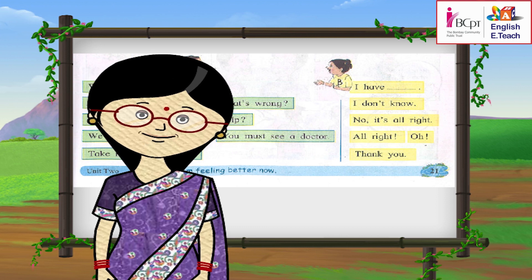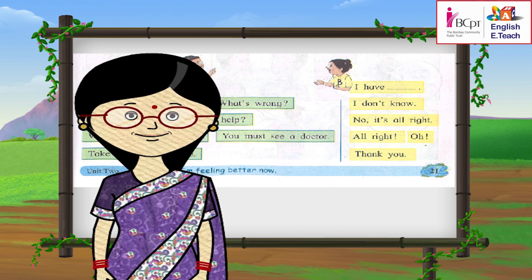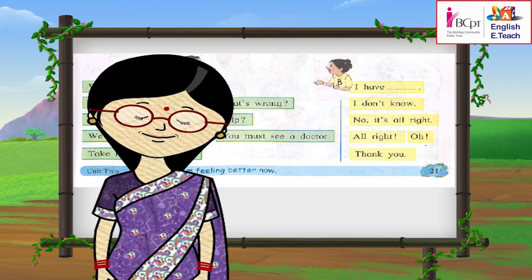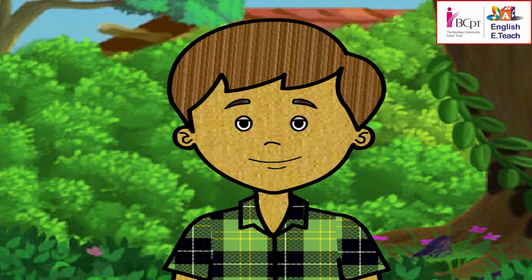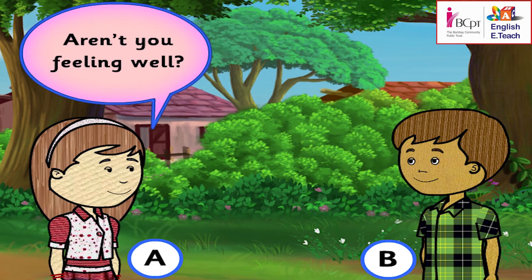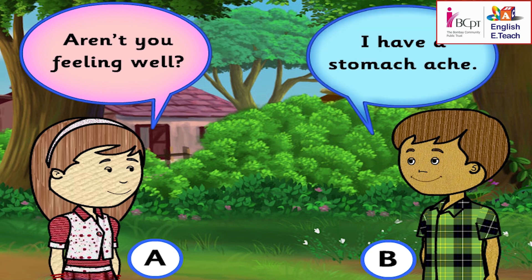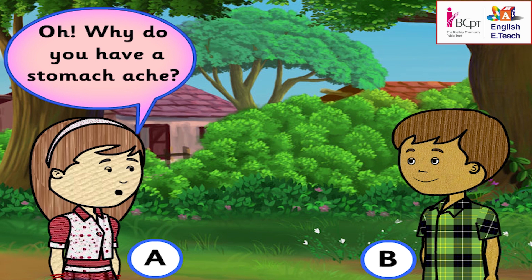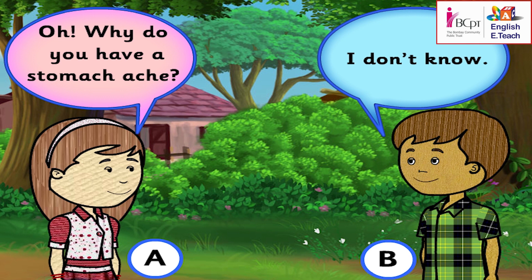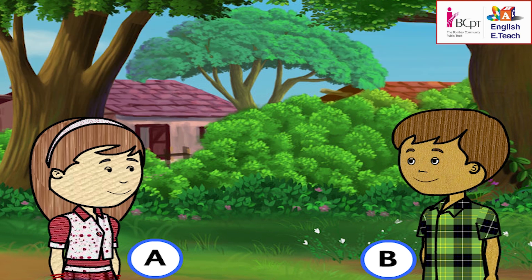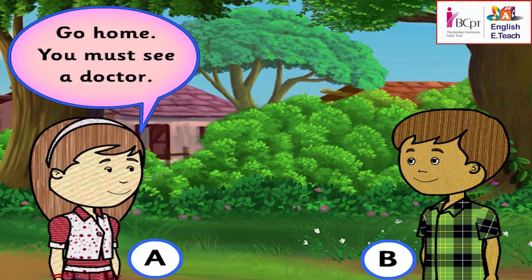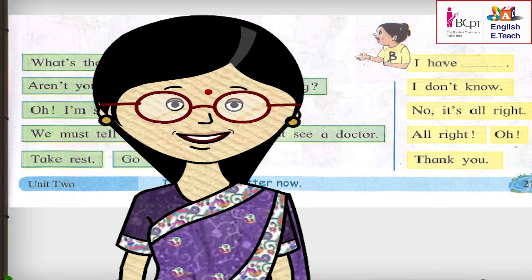I like the way you children are adding your own sentences. Next, Priya and Ahmad. Priya will be A and I will be B. A: Aren't you feeling well? B: I have a stomach ache. A: Oh, why do you have a stomach ache? B: I don't know. A: Go home. You must see a doctor. Good. Your turn, Riya and Sachin.